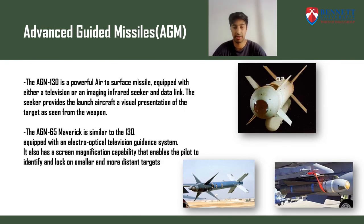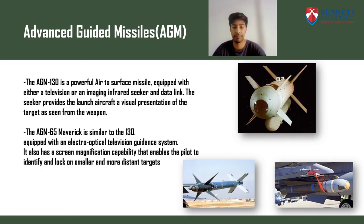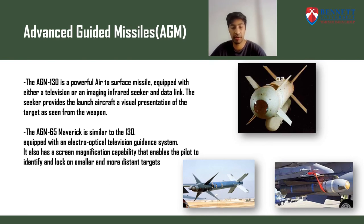The AGM-130 is a powerful air-to-surface missile equipped with either a television or an imaging infrared seeker and data link. The seeker provides the launch aircraft a visual representation of the target as seen from the weapon. Similarly, the AGM-65 Maverick is equipped with an electro-optical television guidance system and has a screen magnification capability that enables the pilot to identify and lock on smaller and more distant targets.